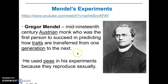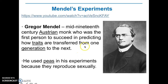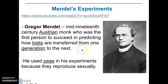He was basically the very first person who studied how traits are passed on from generation to generation. We've always seen that parents have kids and kids look very alike to their parents, but no one really understood why. This was the very first person who actually discovered that these traits are passed on because of the genes, even though he didn't really know what genes were or what chromosomes or DNA were at that time — those were discovered in the mid-1900s.